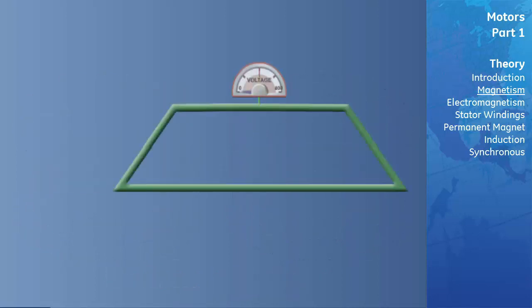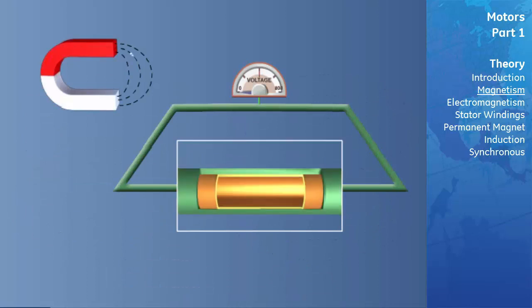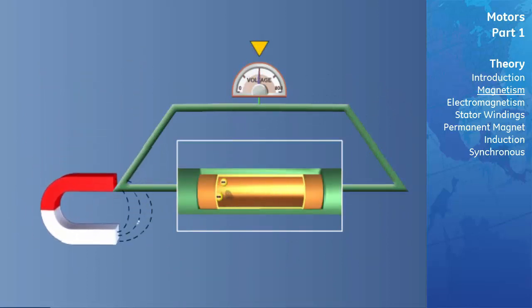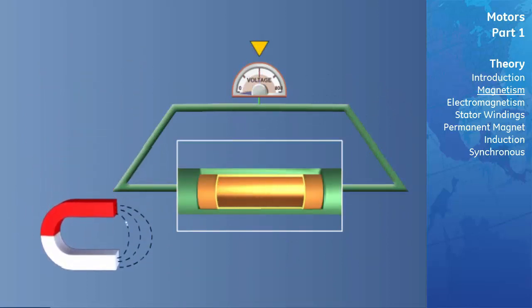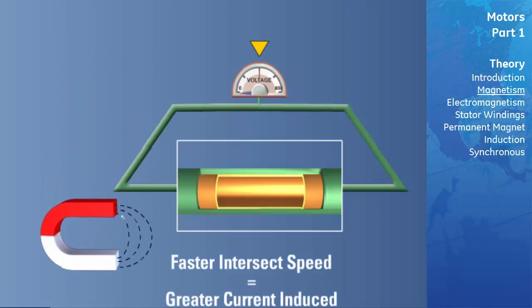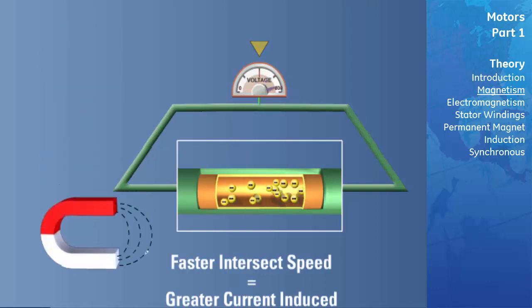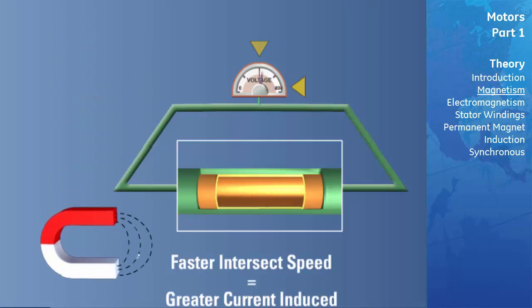When magnetic lines of flux cut through a conductor, a voltage, and hence a current, is induced in the conductor. The magnitude of the induced voltage and current is proportional to the speed at which the conductor is cut by the magnetic field and the strength of the field.